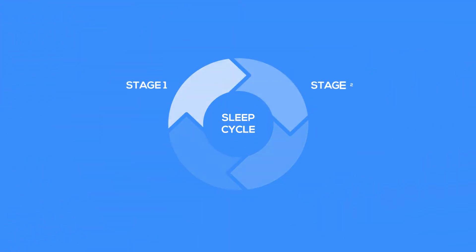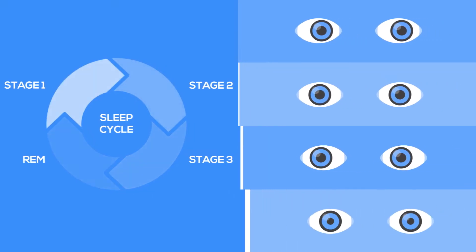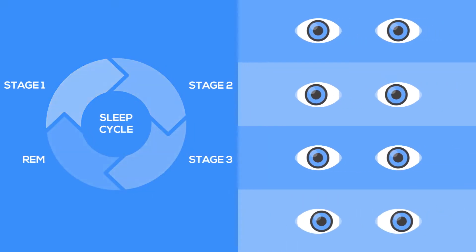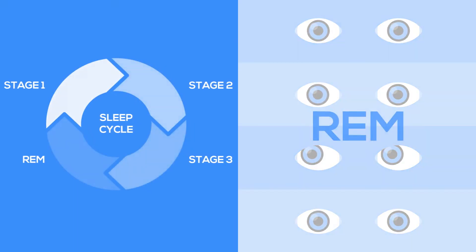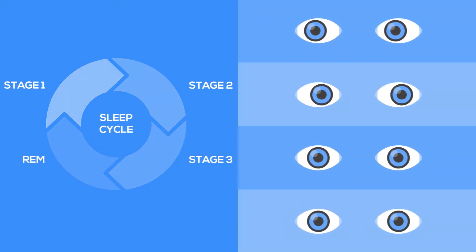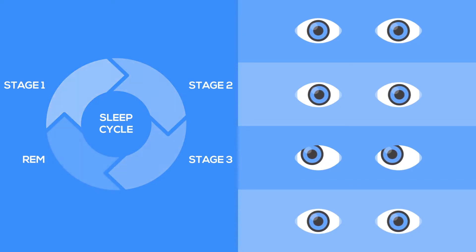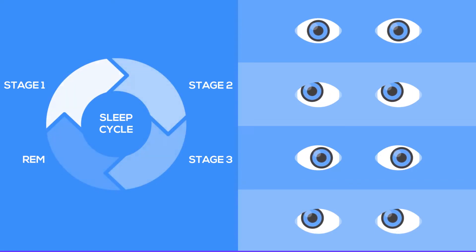A normal sleep cycle consists of four stages. The first three stages consist of non-REM sleep, while the fourth stage consists of rapid eye movement or REM sleep. Lucid dreaming typically happens during REM sleep and is believed to be originated from non-lucid dreams.